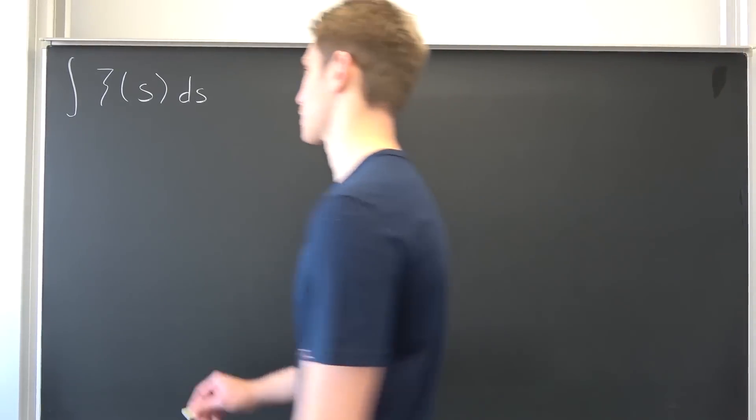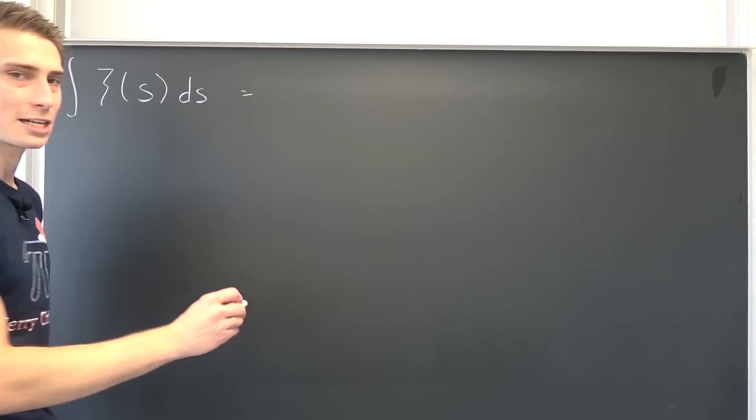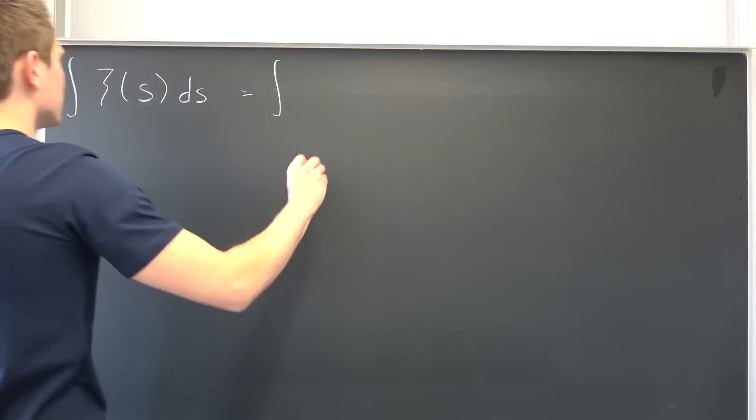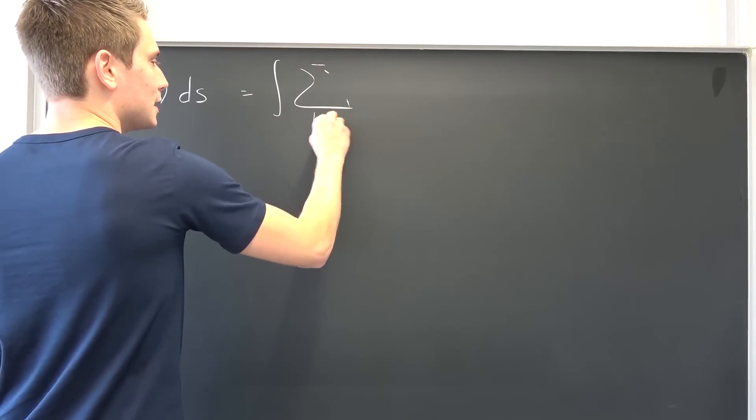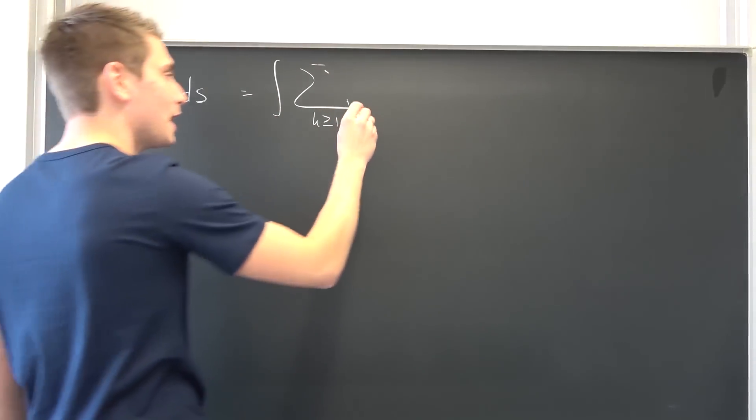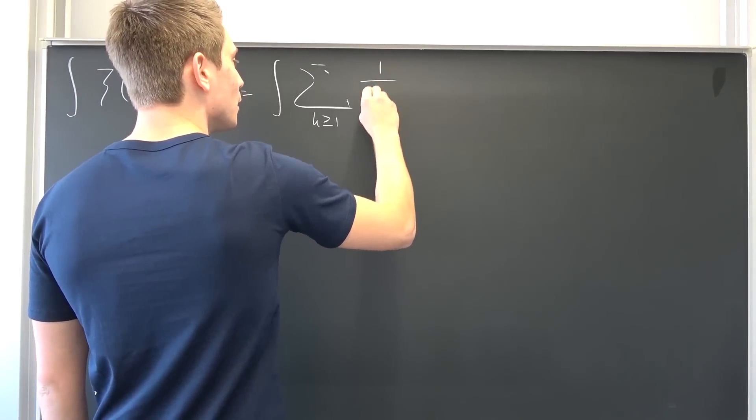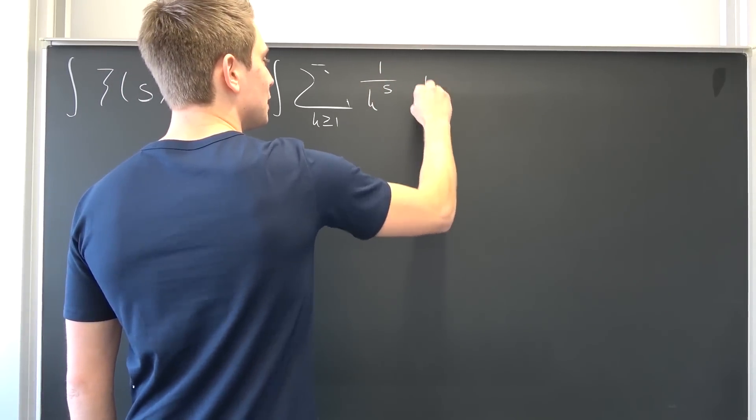And at first, let us write out the definition of the zeta function. That's the most natural thing to actually do. The integral from 0 to infinity, where k is greater or equal to 1, 1 over k to the s power ds.